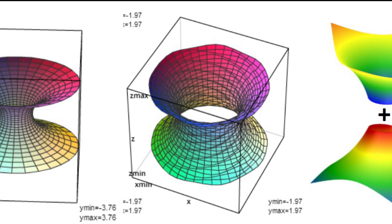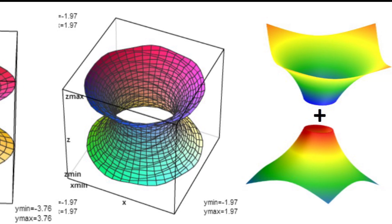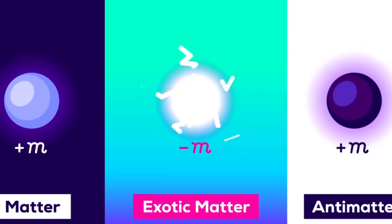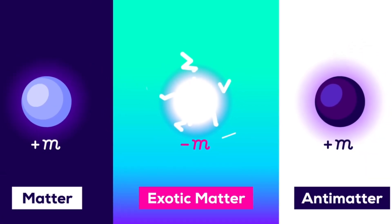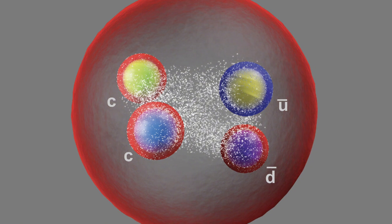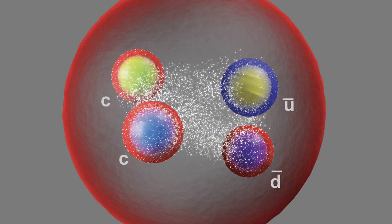Exotic matter is a hypothetical substance with negative energy density that would counteract the wormhole's natural tendency to collapse. Morris and Thorne's work was groundbreaking because it provided a concrete framework for understanding how wormholes might be used for practical purposes such as interstellar travel.